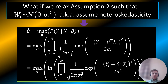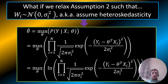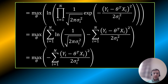What if we relax assumption 2, such that wi is drawn from a normal distribution with mean 0 but with a variance of sigma_i squared — meaning the variance for each data point is different? This is called heteroscedasticity. If we assume that, we do similar math to find the theta that maximizes p(y | x; theta). Taking the natural log converts multiplication to addition, and we end up maximizing an expression with a negative sign divided by 2 sigma_i squared.